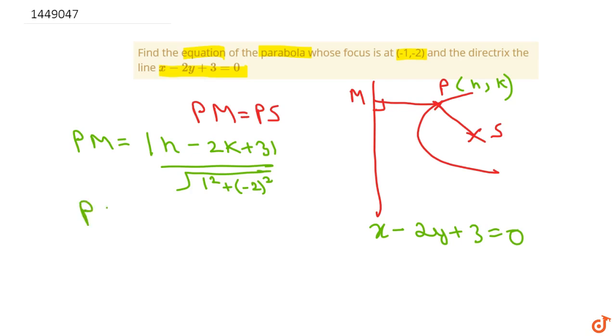Okay? So what will be PS? PS we can simply write distance formula. So this will be √[(h + 1)² + (k + 2)²].